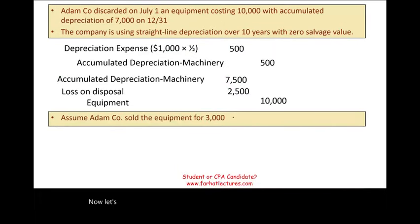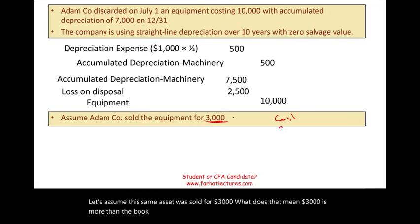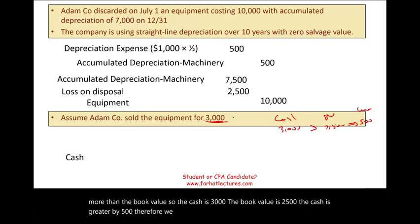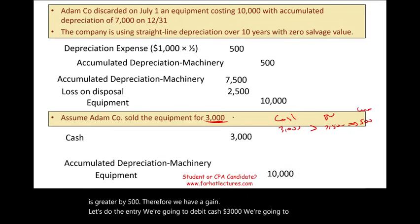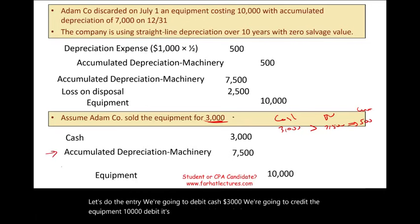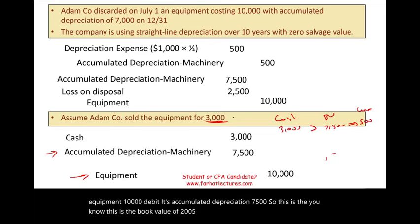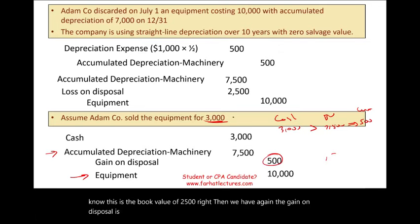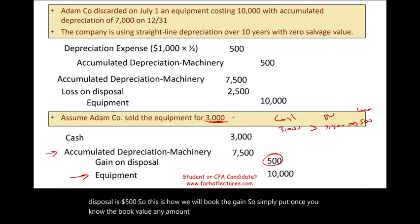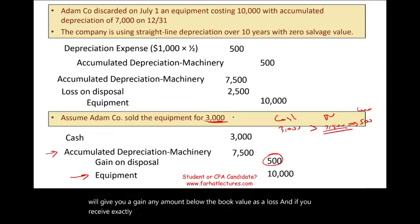Now assume the same asset was sold for $3,000. That is more than the book value of $2,500, so cash exceeds book value by $500 — we have a gain. The entry: debit cash $3,000, credit equipment $10,000, debit accumulated depreciation $7,500 — representing the $2,500 book value — and credit gain on disposal $500. Any amount above book value gives a gain; any amount below is a loss; exactly equal means no gain or loss.